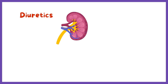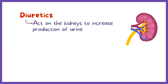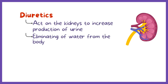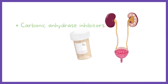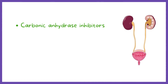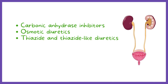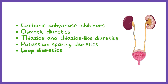Diuretics are medications that act on the kidneys to increase production of urine, therefore elimination of water from the body. There are five main types of diuretics: carbonic anhydrase inhibitors, osmotic diuretics, thiazide and thiazide-like diuretics, potassium-sparing diuretics, and loop diuretics, which we'll be discussing in this video.